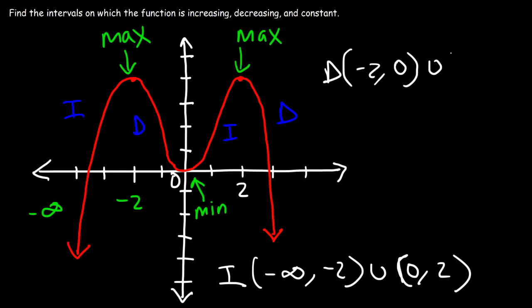And then union — it decreases again starting from 2, and based on the arrow it continues forever to infinity. So the decreasing interval is from negative 2 to 0, union, 2 to infinity.